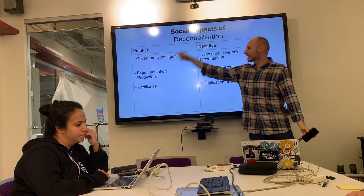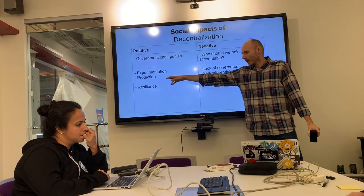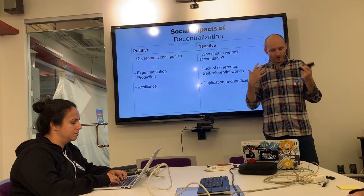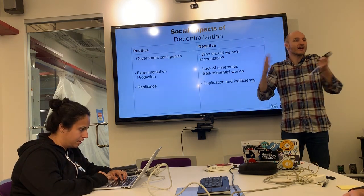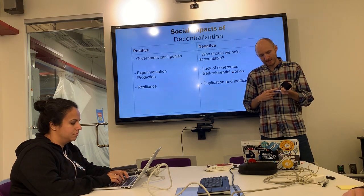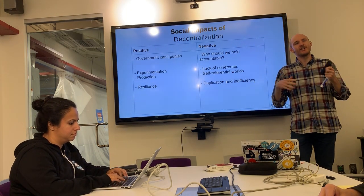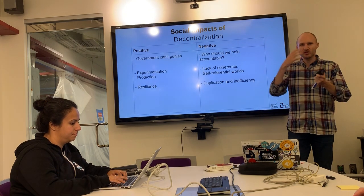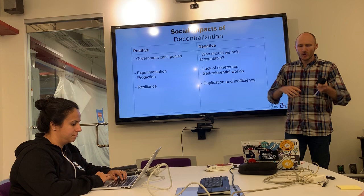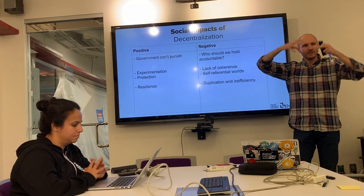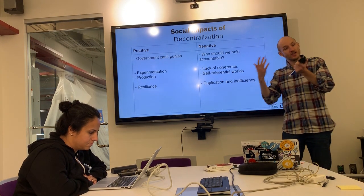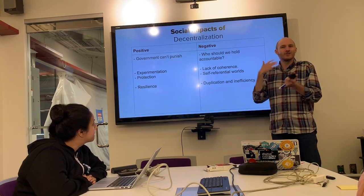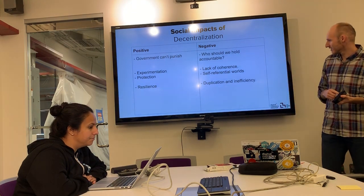Decentralization also enables protection for marginalized groups — or the creation of self-referential sub-worlds. This connects to the reading about platforms like Gab and lolicon — Japanese animated child pornography drawings — enabled through internet-based decentralization, where new little sub-worlds can exist. In some ways you might see that as positive — these communities can thrive — but they can become self-referential, and if you don't think they're a good thing, that's a serious problem.